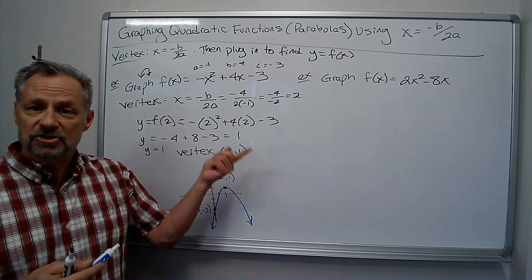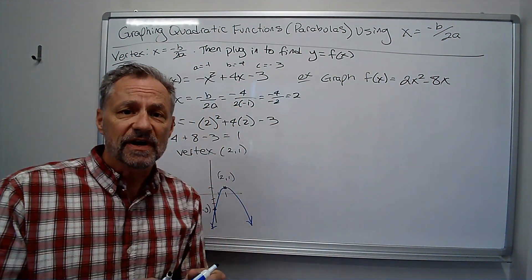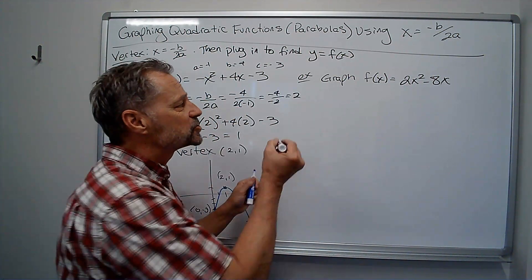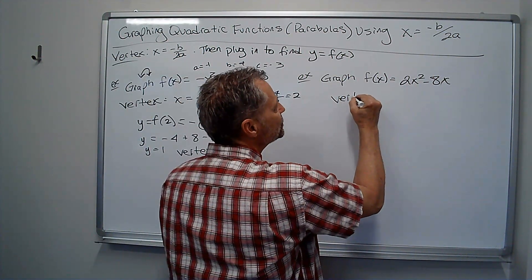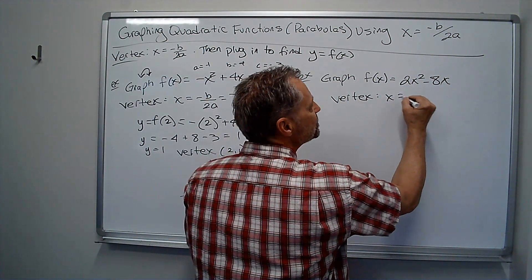All right, let's try another one. Now this one doesn't have the constant term, and that's fine. I don't want to complete the square. I want to say the x value of the vertex is negative b over 2a.